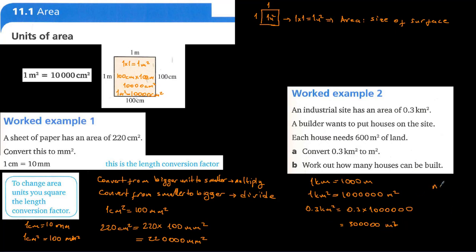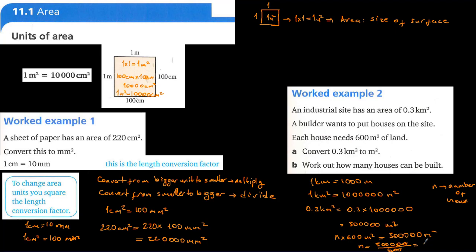Let n represent the number of houses. For each house we need 600 meters square, and we have 300,000 meters square total. So n equals 300,000 divided by 600. Simplifying, that is 3,000 divided by 6, which equals 500. We can build 500 houses on this land.